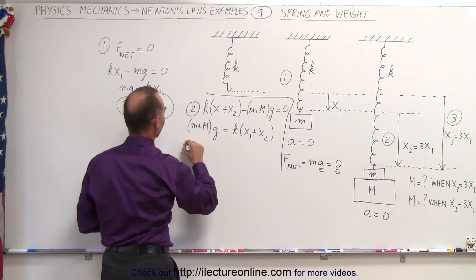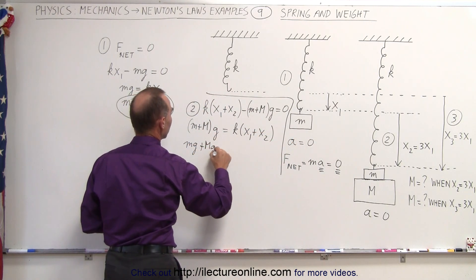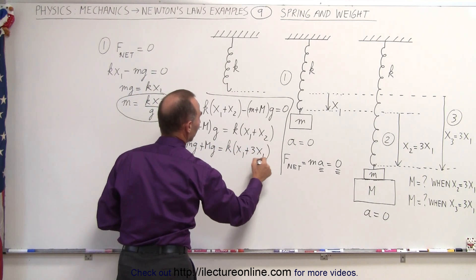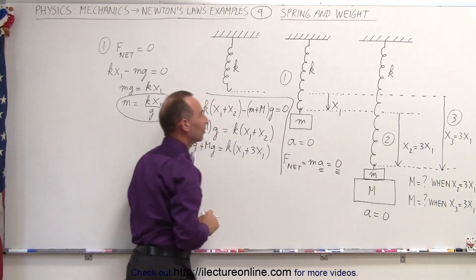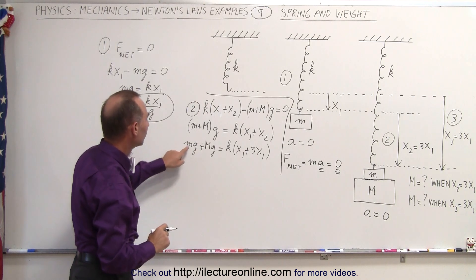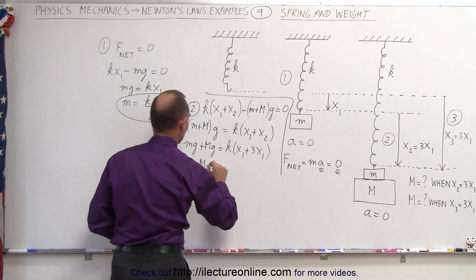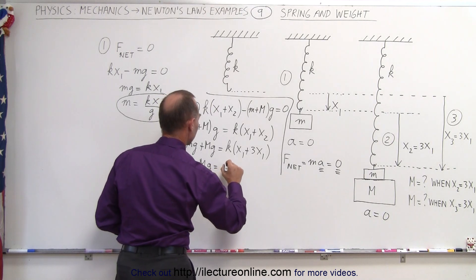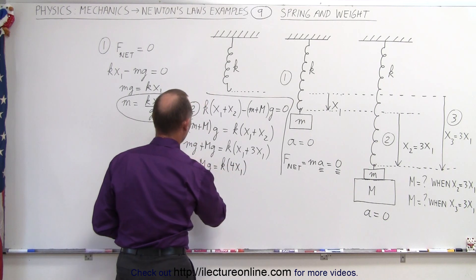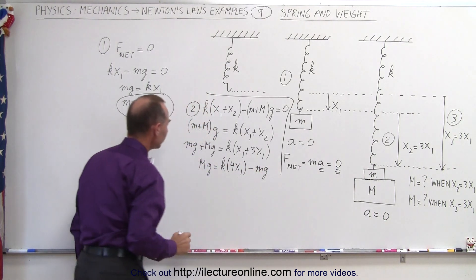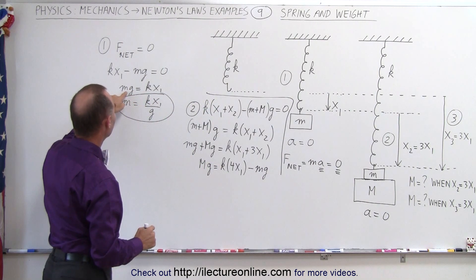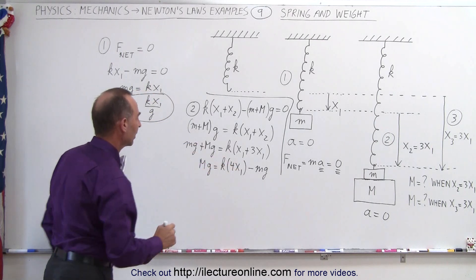So we have little mg plus big Mg is equal to k times x1 plus 3x1, because the additional distance x2 is 3 times the initial distance x1. Since we're looking for big M, we move little mg to the other side. So big Mg equals k times 4x1 minus little mg. But little mg can be expressed as kx1, so we substitute that in.